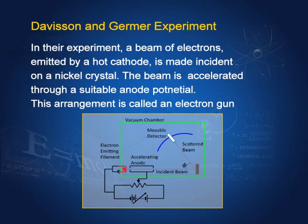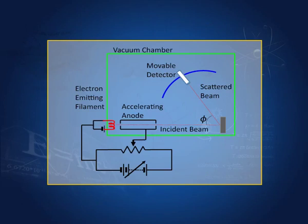There is a cathode and anode which accelerates these particles. They are incident at the crystal at an angle phi, and there is a detector which can move on a circular arc. The whole apparatus is placed in vacuum so that the electrons do not interact with other particles.